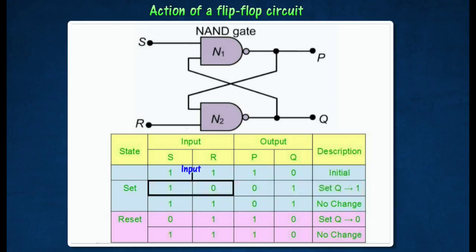At the flip state, input S is at logic 1 and input R is at logic 0. This produces output P at logic 0 and Q at logic 1.